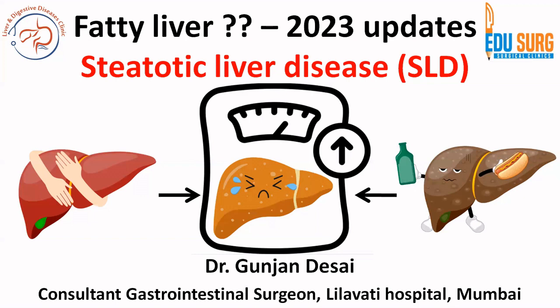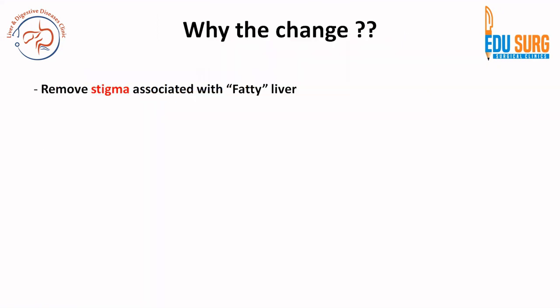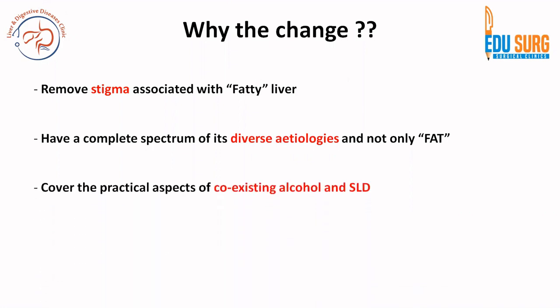Let us now see this in medical terminology. This is the 2023 article published in the Journal of Hepatology. Important reasons cited for this change include removal of stigma associated with fatty liver — the term steatotic liver disease is non-stigmatizing, like osteoporosis. Another key point is that the entire spectrum of diverse etiologies is covered, not only fat as implied by the term fatty liver.